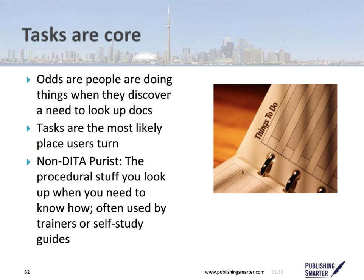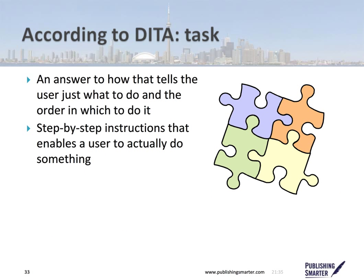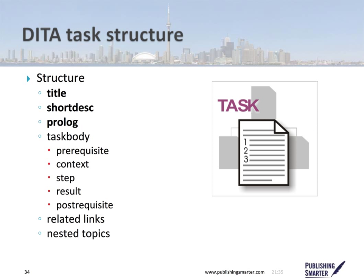According to DITA, the task is an answer to 'how' — it tells the user just what to do and the order in which to do it. It's step-by-step instructions that enable a user to actually do something. The DITA task structure is made up of a title, a short description, a prologue, and then the task body with all of its required and optional components — prereq, context, step result, post-requisite — plus the option for related links and nested topics. But at the beginning, you work with the title, the short description, and perhaps the prologue.